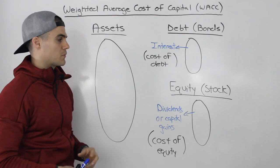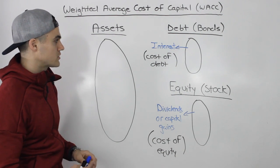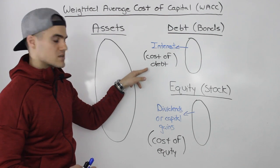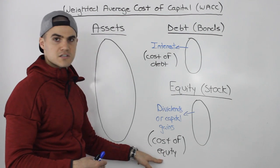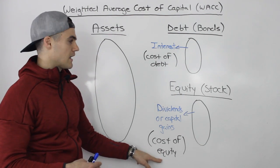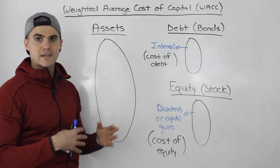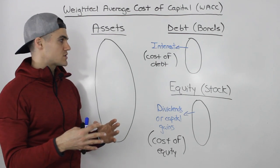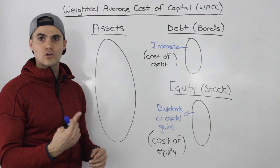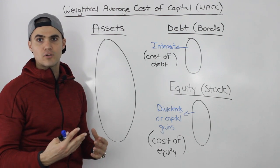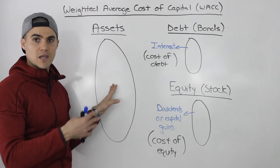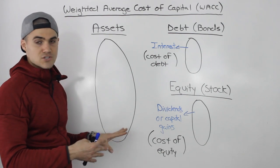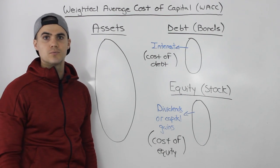In the next few videos, we're going to go into more detail talking about how to find the cost of debt and the cost of equity. Then we'll go over how we can take an average of those, so we have a single cost of capital that our assets have to earn more than in order for our company to grow.